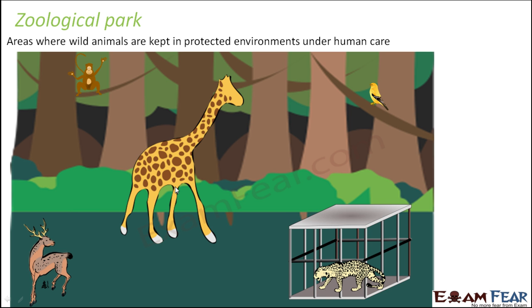If you have visited a zoo, you will see that the animals are present inside cages so they cannot come out. They are captivated, but at the same time they are taken care of very properly. Proper food is given on time and the environment is made suitable for their existence. But this is not their natural habitat. This is how zoological park conservation works.